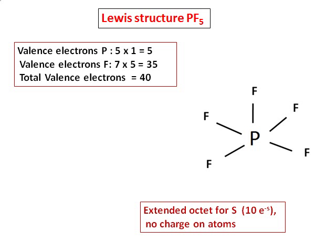Similar to PF5, we can have compounds like PCl5, PBr5, and PI5. But compounds like NF5 or NCl5 cannot be formed. As I mentioned before, nitrogen cannot expand its octet.